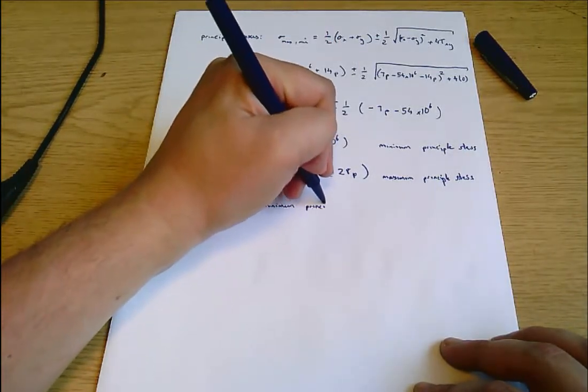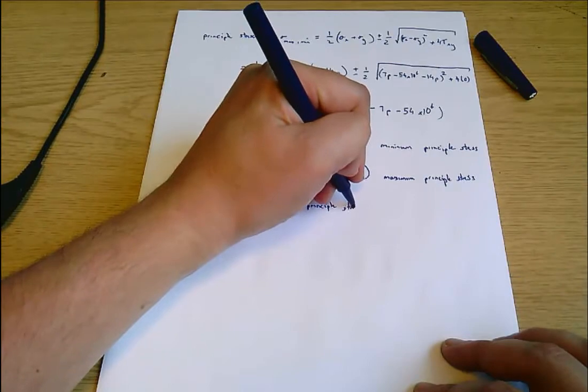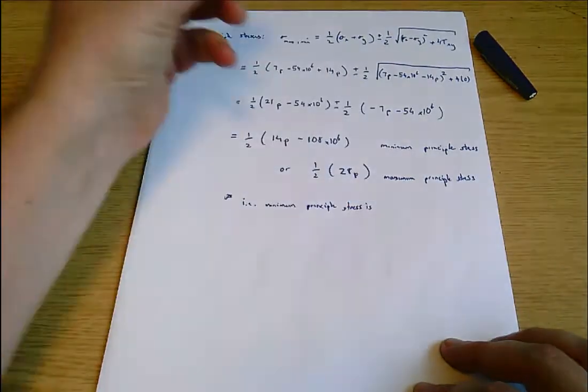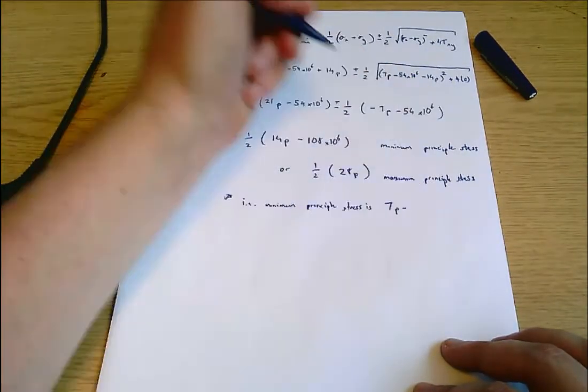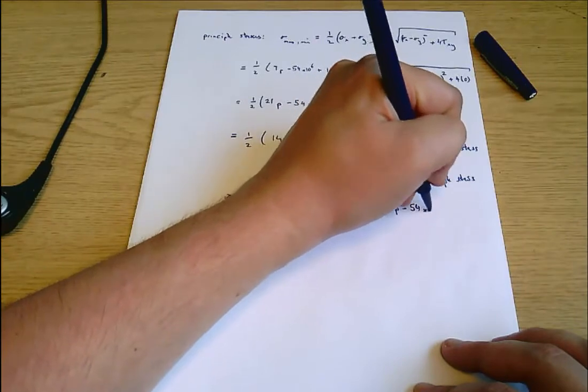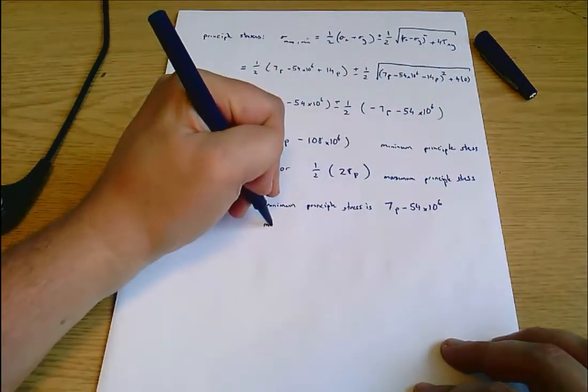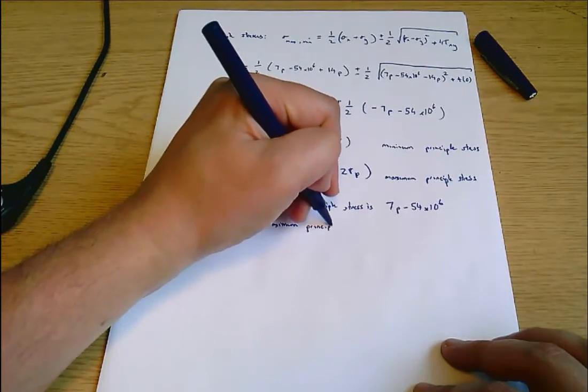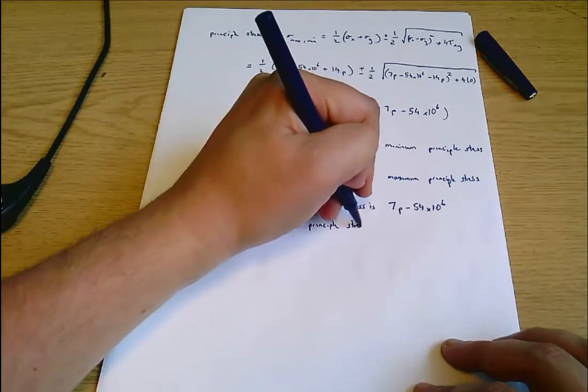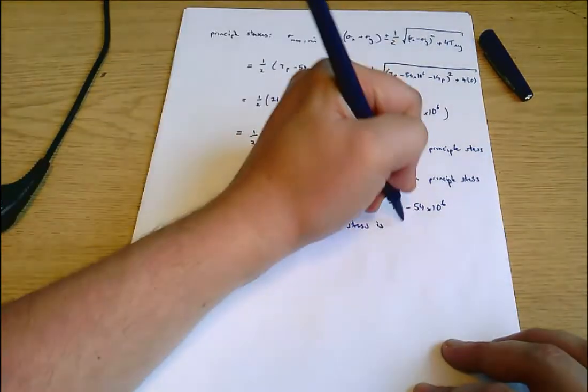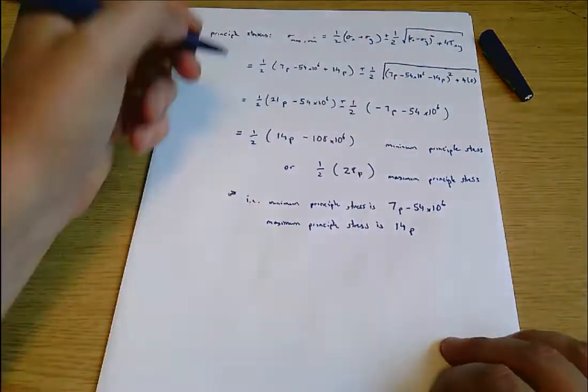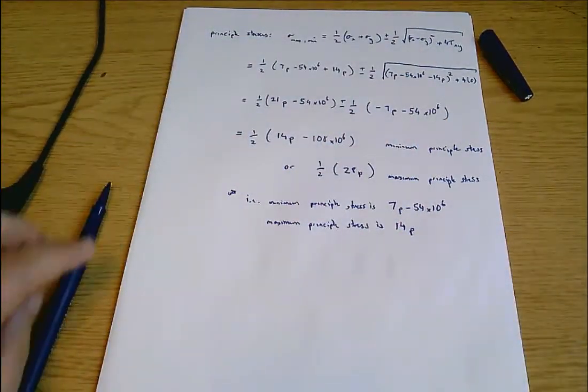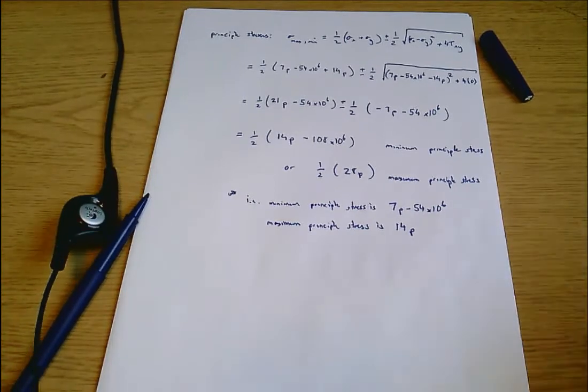So I can say the minimum principal stress is 7P minus 54 times 10 to the 6, and the maximum principal stress is 14P. Next, what else did the question want?